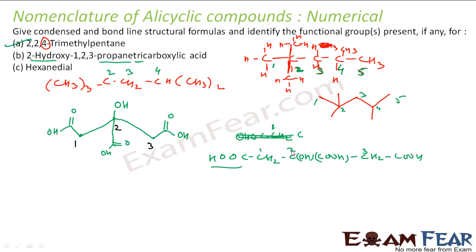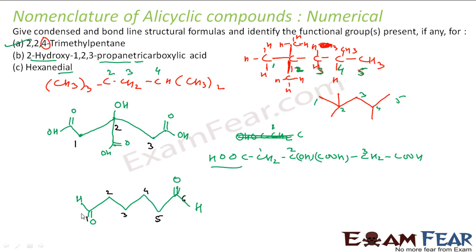The next compound is hexanedial. Let us draw hexane: 6 carbons numbered 1 through 6. Since no locant is given for the dial group, the aldehyde groups are attached at both ends of the chain. So I place an aldehyde (CHO) at carbon 1 and an aldehyde (CHO) at carbon 6, with 4 CH2 groups in between. Condensed formula: CHO—CH2—CH2—CH2—CH2—CHO.